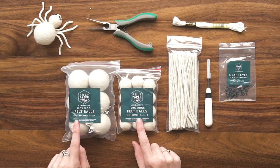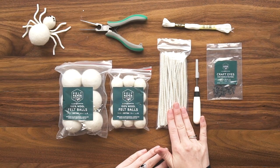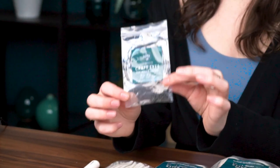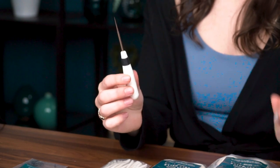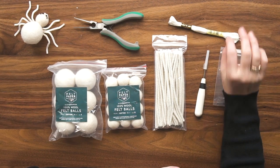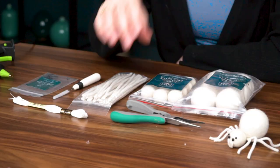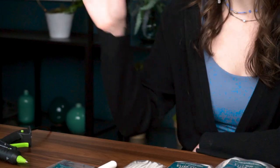To make this spider, I'll be using two different sizes of cotton felt wool balls - the four centimeter and the two centimeter - as well as chenille pipe cleaners for the legs. For the eyes, I'll be using this multi-pack of craft eyes, and I'll need this awl to get them in the felt ball. To make a little spider web for him to hang by, I grabbed white embroidery thread. For tools, I'll be using needle nose pliers and wire cutters as well as some hot glue.